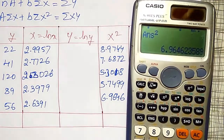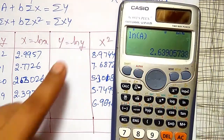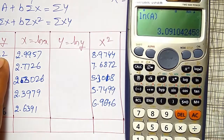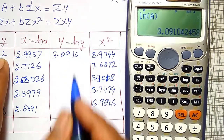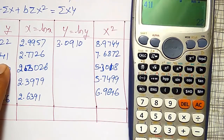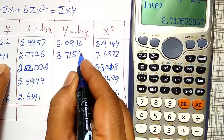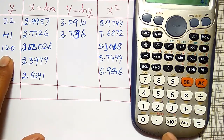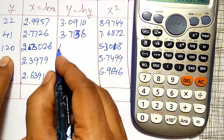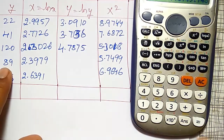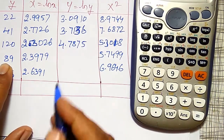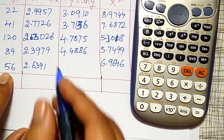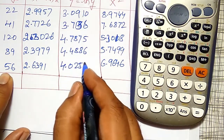Similarly, for the capital Y column, I compute ln of each y value. For y = 22: ln(22) = 3.0910. For y = 41: ln(41) = 3.7136. For y = 120: ln(120) = 4.7875. For y = 89: ln(89) = 4.4886. For y = 56: ln(56) = 4.0254.